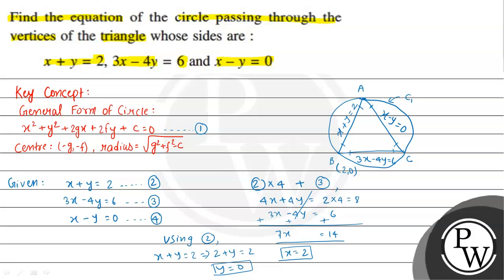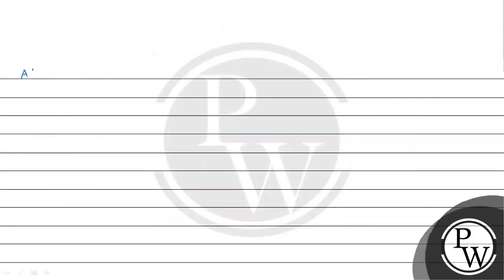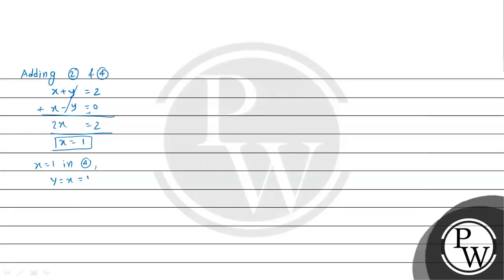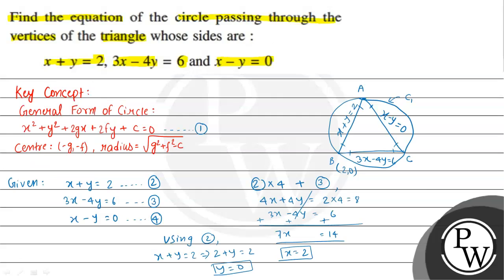Similarly, adding equation 2 and equation 4 — that is x plus y equal to 2 and x minus y equal to 0 — the y and minus y cancel, giving 2x equal to 2, so x equals 1. Putting this value in equation 4, y equal to x which is equal to 1, therefore y is also 1. So the coordinate of point A, the intersection of these two lines, is (1, 1).